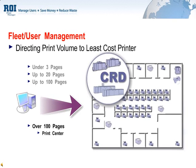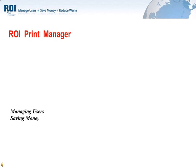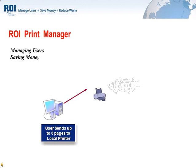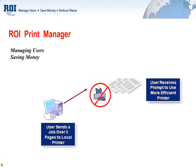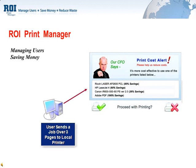But how would you implement this without ROI Print Manager? Here's how ROI Print Manager works. A user sends 3 pages to their local printer — no problem, probably more cost-effective than walking down the hall. When a user sends more than 3 pages, ROI stops the job and presents the user with a pop-up screen that is fully customizable.